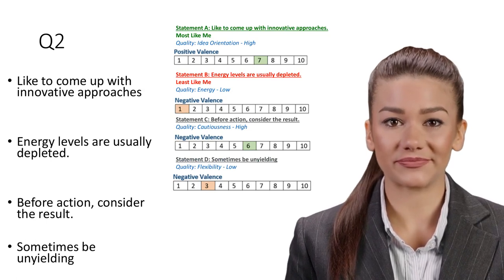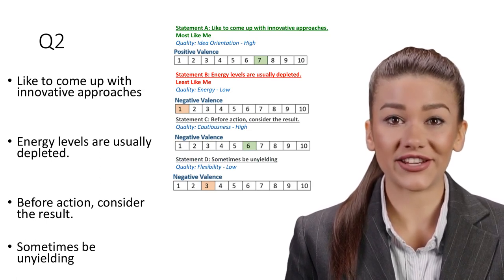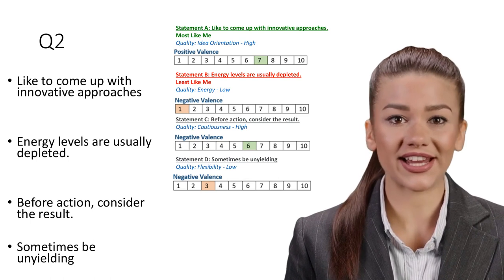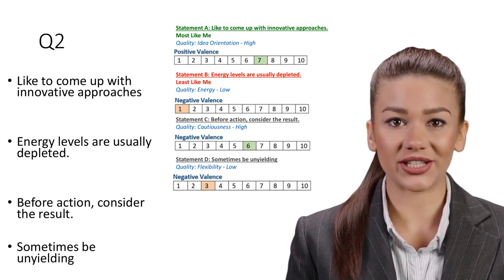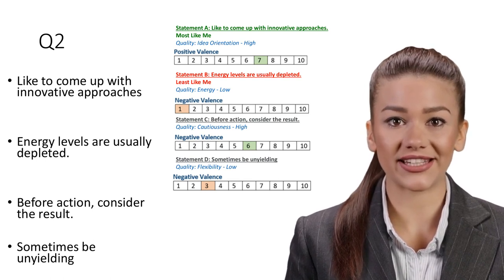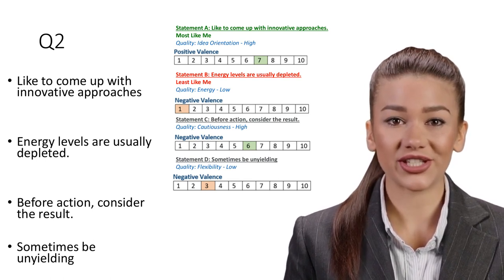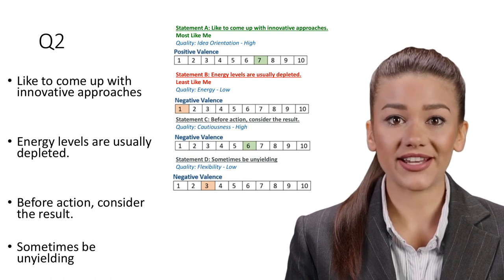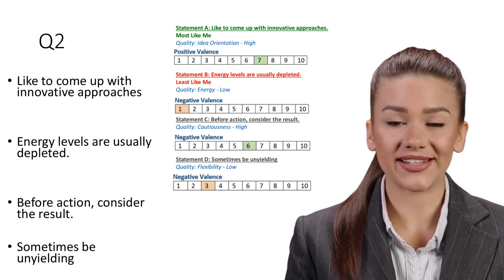Question 2. Statement A: Like to come up with innovative approaches. Most like me. Quality: Idea orientation, High. An idea-oriented approach focuses on thinking creatively and valuing innovation. In an era of fierce competitiveness, this is a quality highly sought after by businesses.